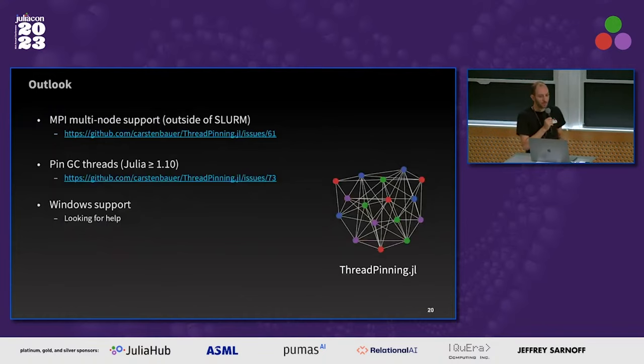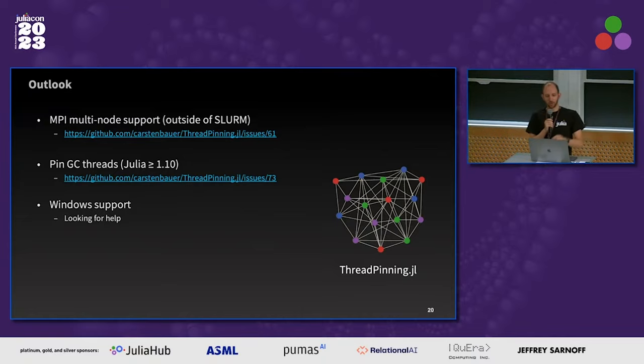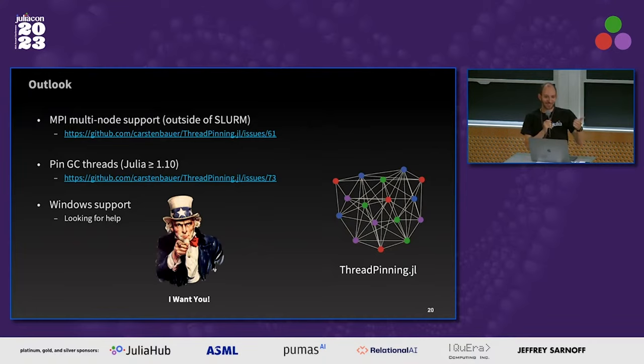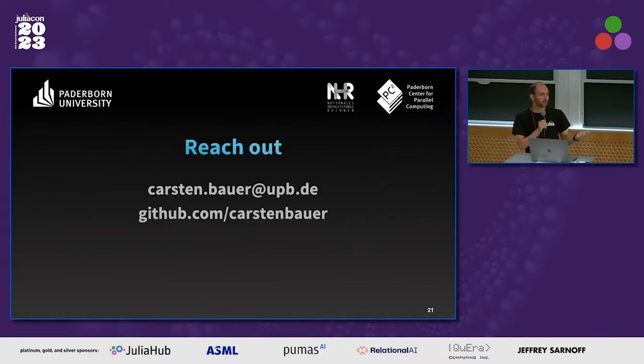Coming to an end — what I'm planning to add: MPI support, for when you manually have multiple nodes and not just one; pinning GC threads — in Julia 1.10 we now have garbage collector threads and we want to control them as well; Windows support, as I mentioned, there's an open PR for it and I want your help. I don't have a Windows machine, which hampers development. If you care about Windows, reach out to me — half the work is already done. Feel free to reach out on GitHub, here at JuliaCon, or whatever other channel works. Thanks for your attention.